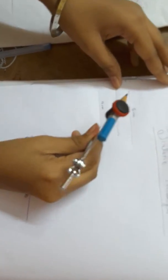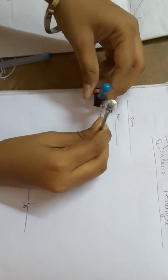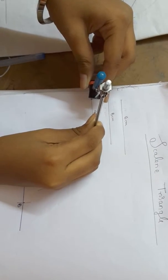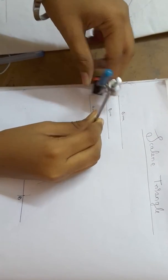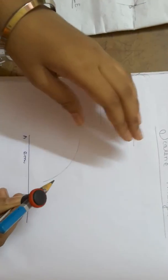Again, you take the four centimeter measurement. Put it in the compass at that point.